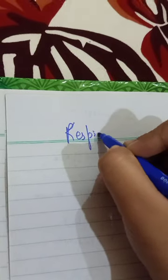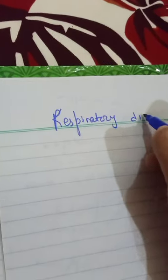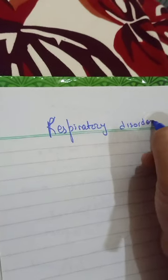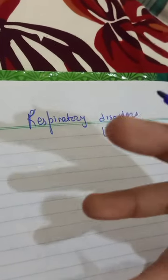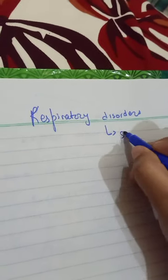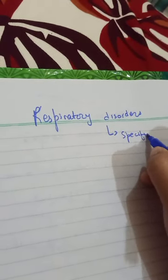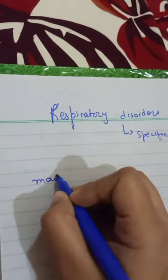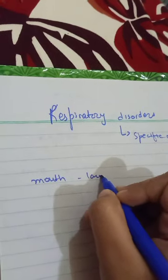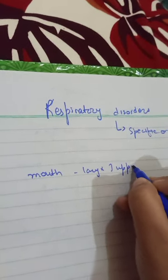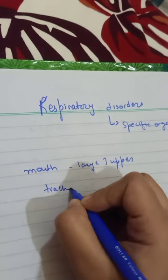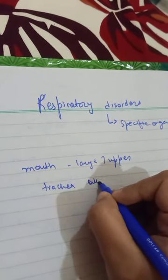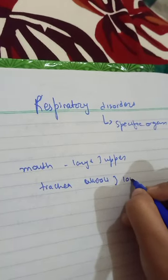In this video, we are going to discuss about respiratory disorders. A disorder is basically the dysfunctioning of a specific organ. We are having a respiratory tract: from the mouth to the larynx, we have the upper respiratory tract, and from the trachea to the alveoli, we have the lower respiratory tract.